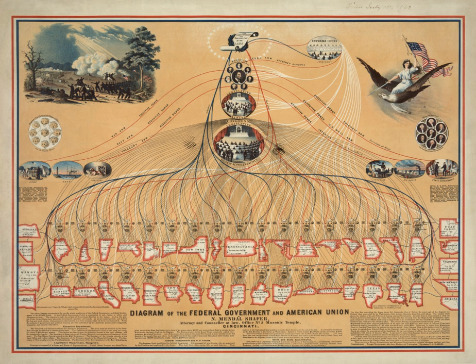The executive branch consists of the President and those to whom the President's powers are delegated. The President is both the Head of State and Government, as well as the Military Commander-in-Chief and Chief Diplomat. The President, according to the Constitution, must "take care that the laws be faithfully executed" and "preserve, protect and defend the Constitution." The President presides over the executive branch of the federal government, an organization numbering about five million people, including one million active duty military personnel and 600,000 Postal Service employees.